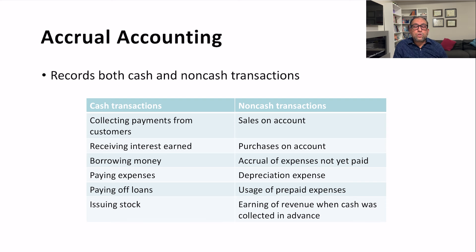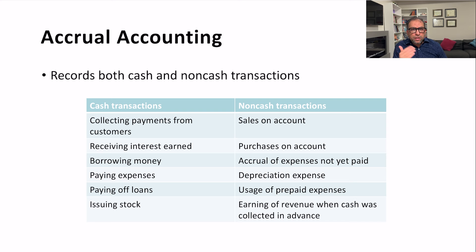Non-cash transactions include: sales on account — debit accounts receivable, credit sales; purchase on account — debit purchases, credit accounts payable; accrual of expenses not yet paid, such as rent expense — debit rent expense, credit rent payable; salaries expense — debit salaries expense, credit salaries payable; and depreciation — debit depreciation expense, credit accumulated depreciation. No cash is involved in any of these.